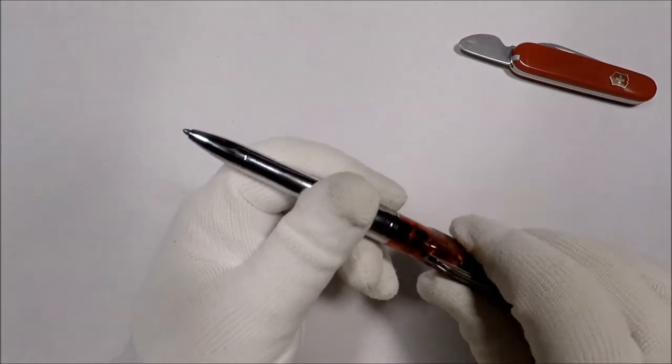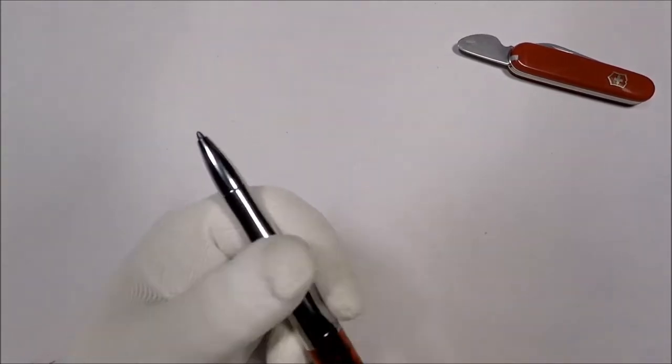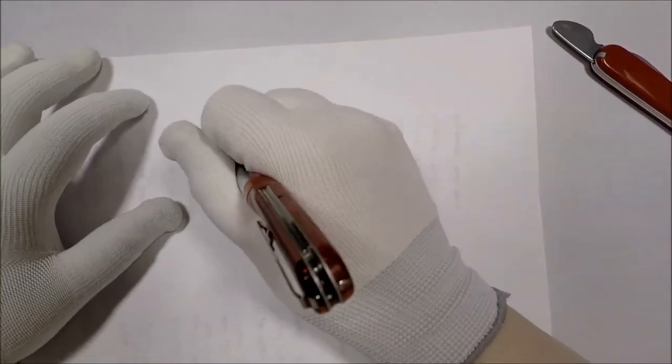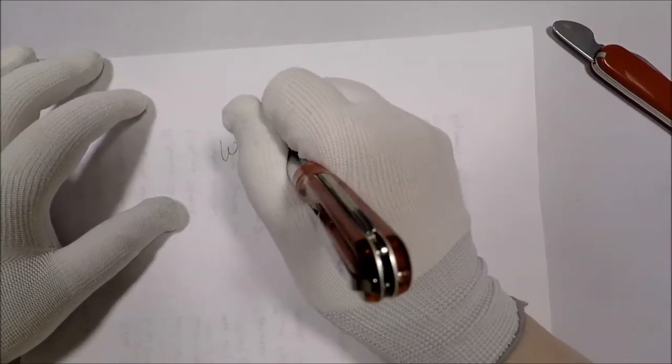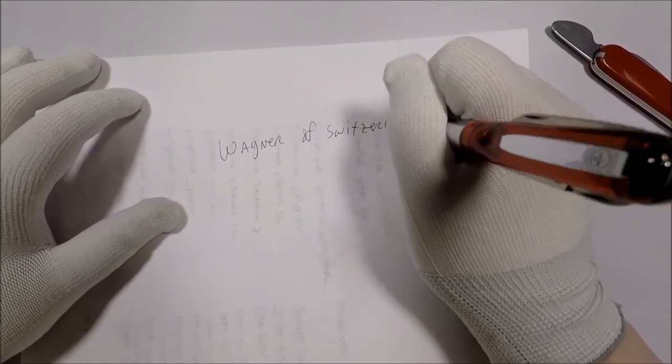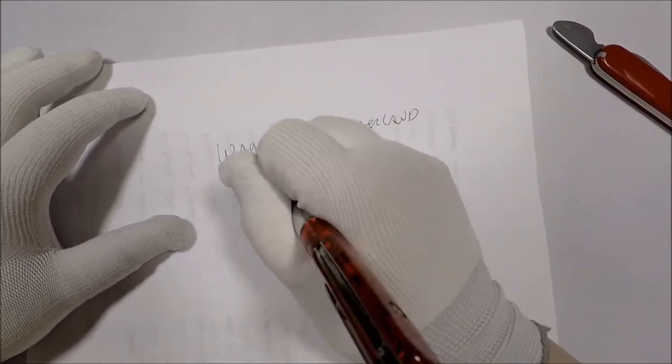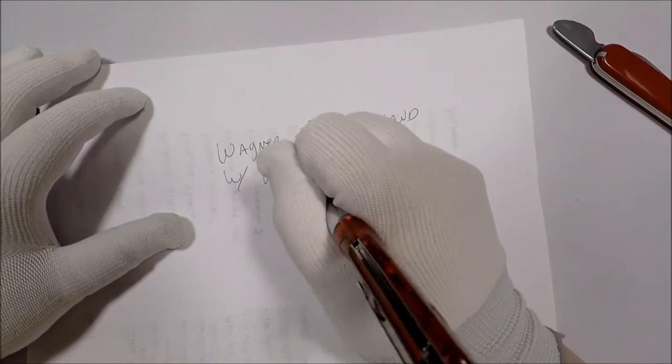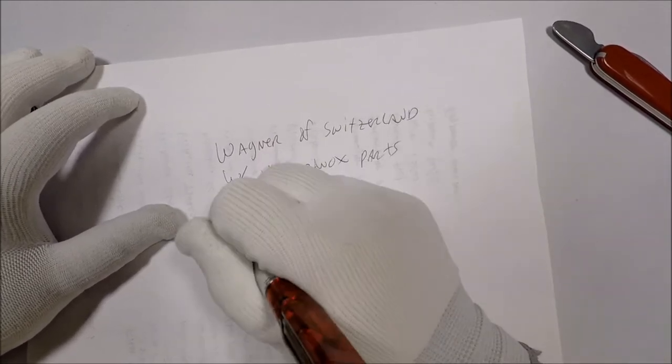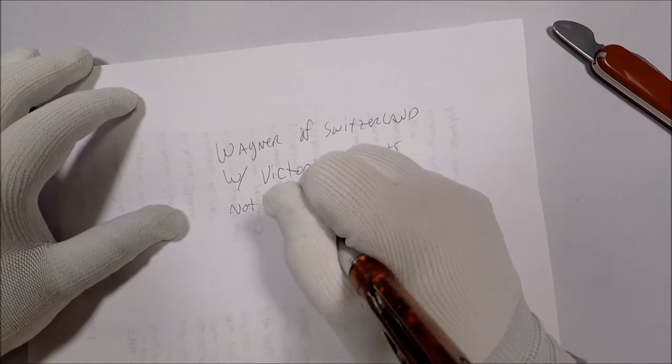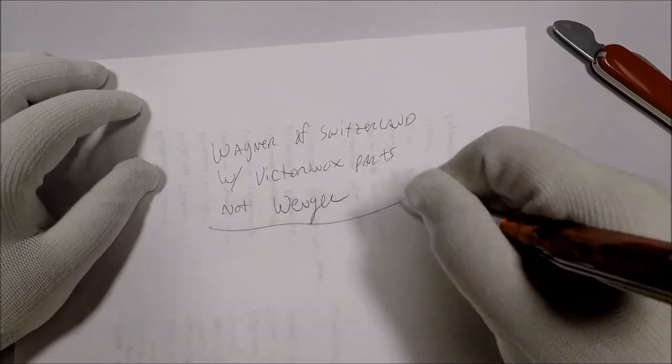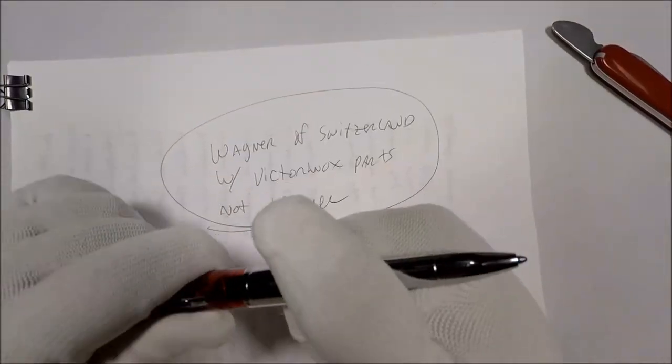And additionally, you got a pen. Let me grab some paper. So this is the Wagner of Switzerland with the Victorinox parts. Not winger.